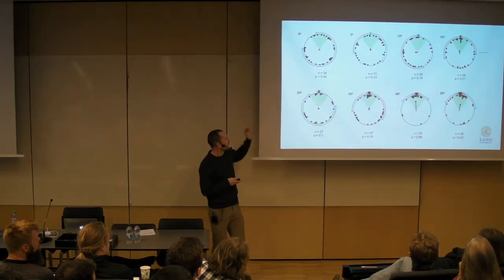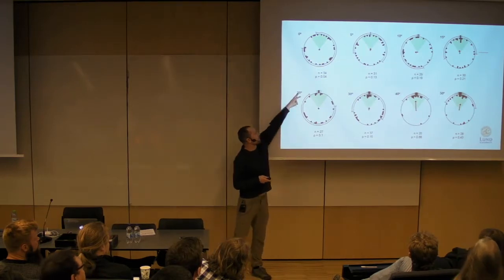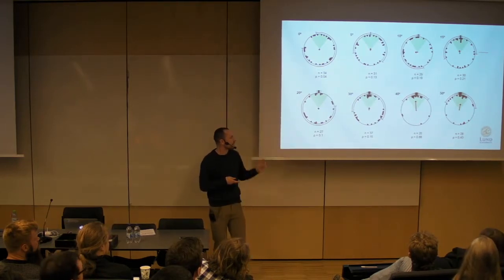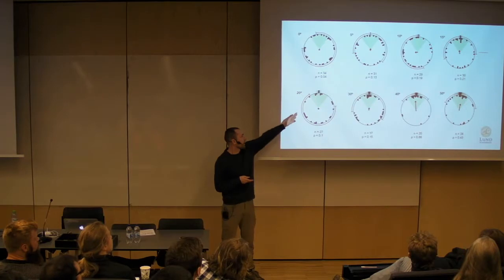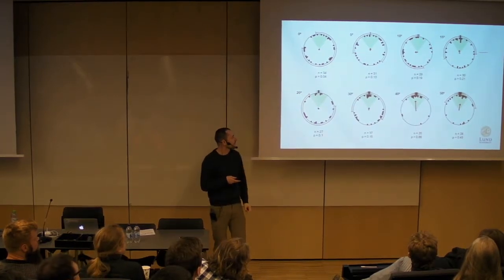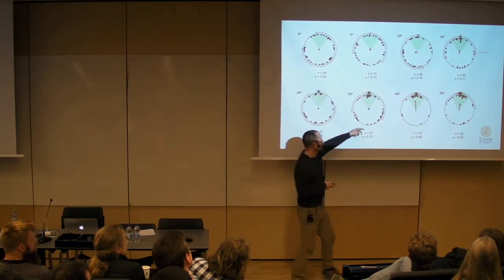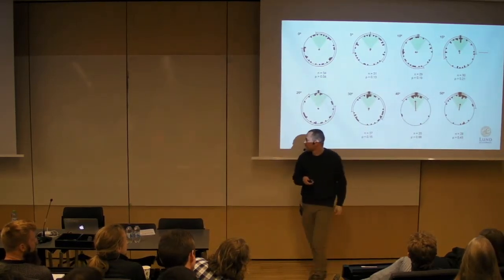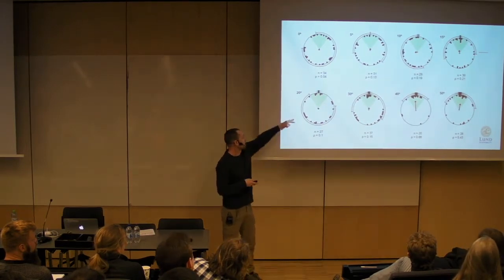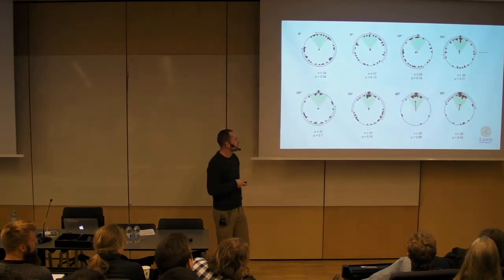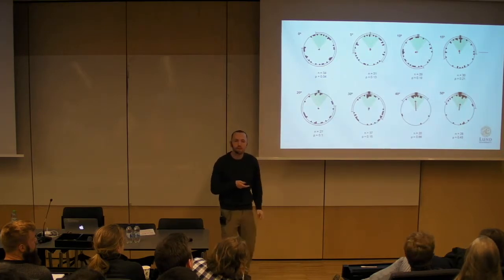I took lots of different stimuli and lots of animals and applied this experiment many different times. In the data, these circles represent various different treatments. This number here is the angle subtended by the half-width of the stimulus. I have a range of increasing size, and this red arrow represents the centroid with the circular mean and circular variance. These are the individual animals for each of the different treatments.